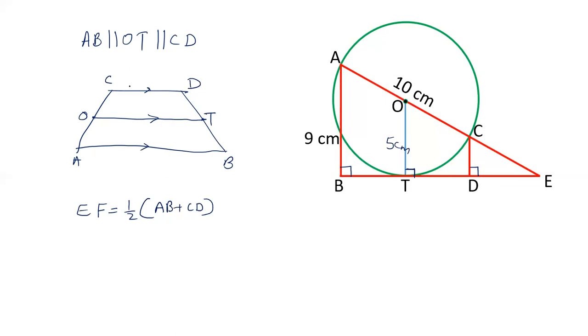So here AB is parallel to OT, parallel to CD. And O is the midpoint of AC. The reason is O is the center of the circle. AO and OC will be radius. So each will be 5 cm.